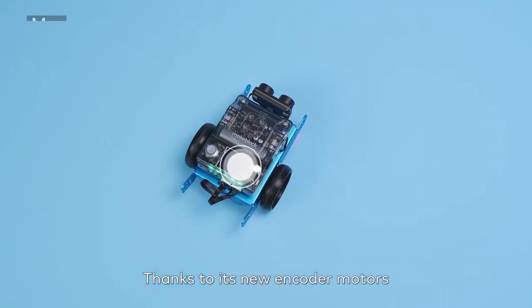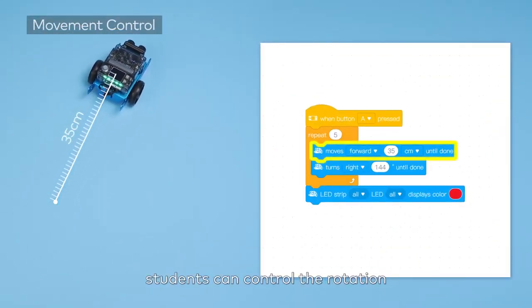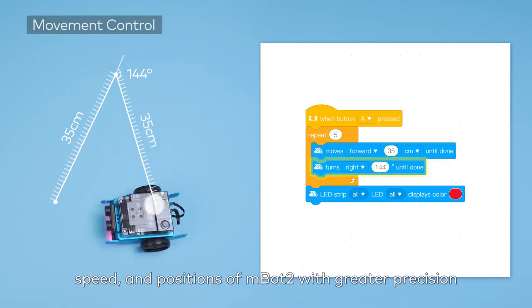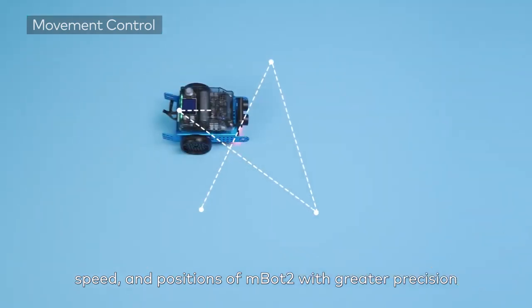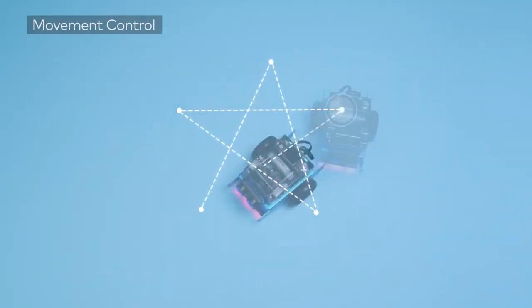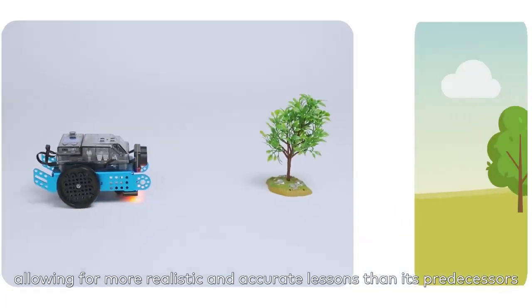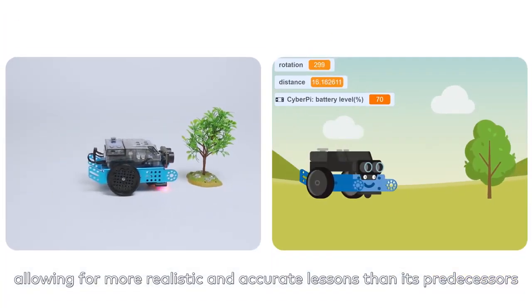Thanks to its new encoder motors, students can control the rotation, speed, and positions of MBOT2 with greater precision, allowing for more realistic and accurate lessons than its predecessors.